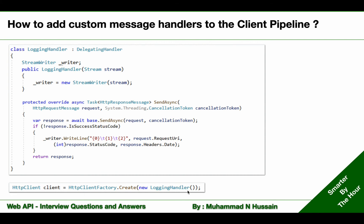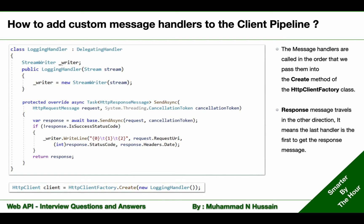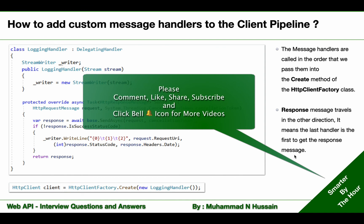Remember, the message handlers are called in the order that we pass them into the Create method of HttpClientFactory — first will be called first, second on second, and so on. Note that this order is from the sending request point of view. From the response point of view, the response message travels in the opposite direction, meaning the last handler is the first to get the response message.